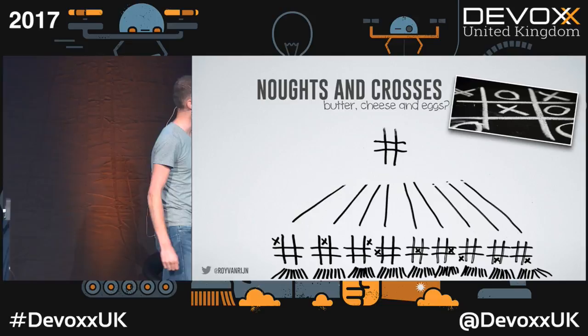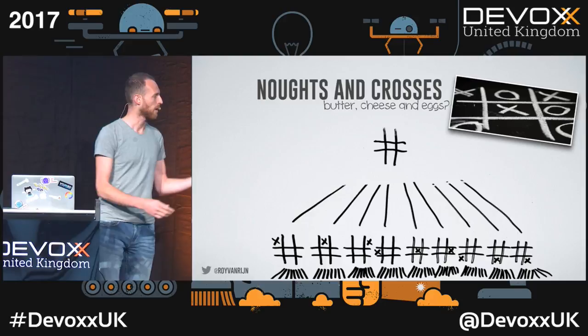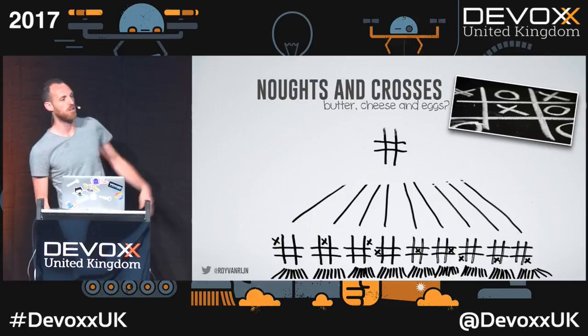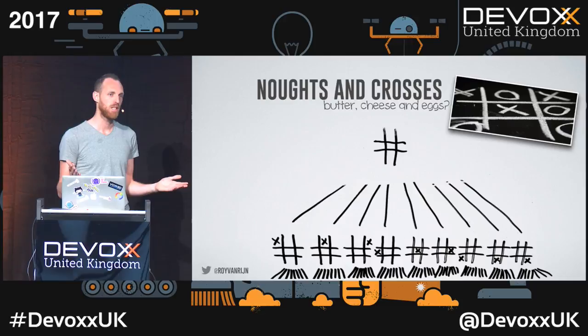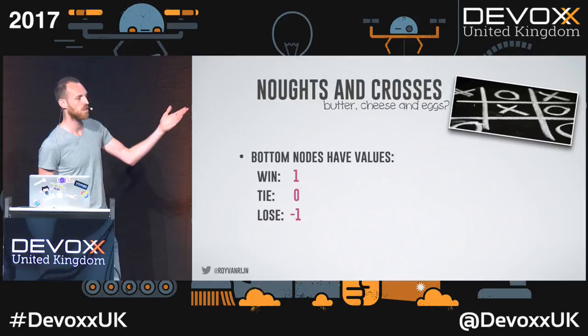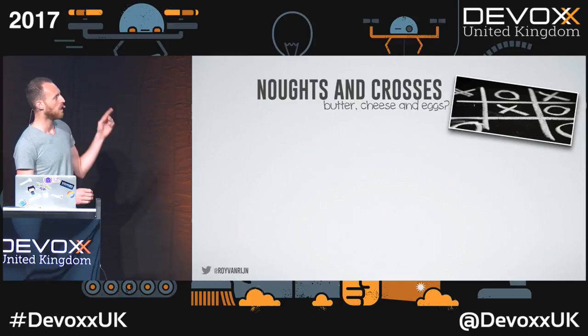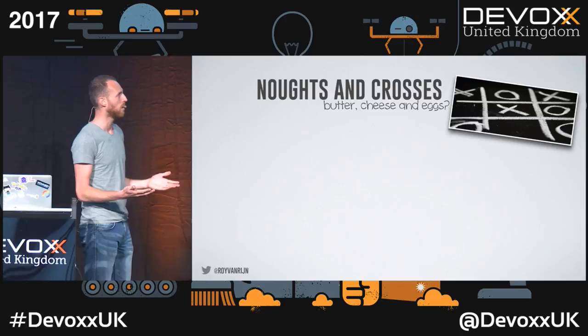In knots and crosses, if we draw the entire tree, we start with an empty board and there are nine possibilities — top left, top middle, top right, etc. After that there are eight possible choices, then seven. That tree is too large to fit on a slide, but for a computer it's very easy to calculate to the end. We assign values: if we win, one; if we tie, zero; if we lose, minus one. If we apply Minimax and play to the end, you've solved tic-tac-toe and can play it perfectly.